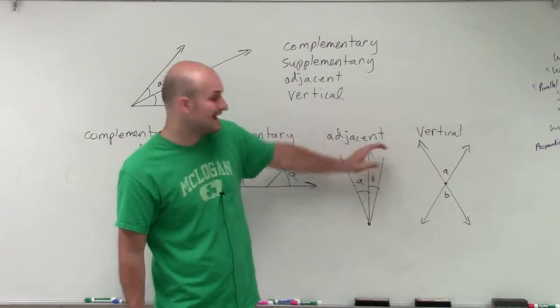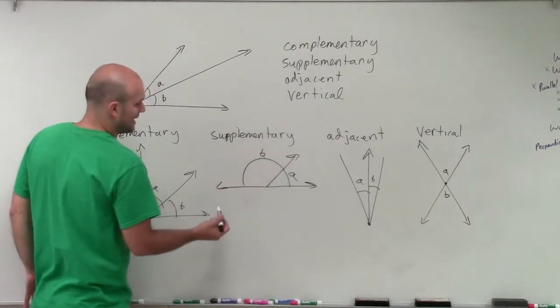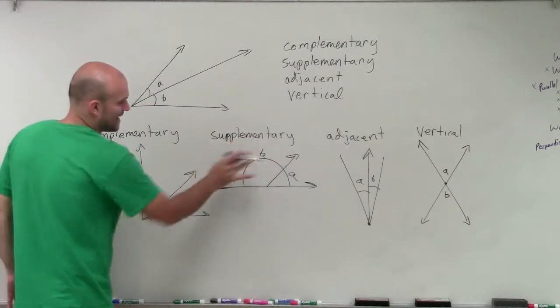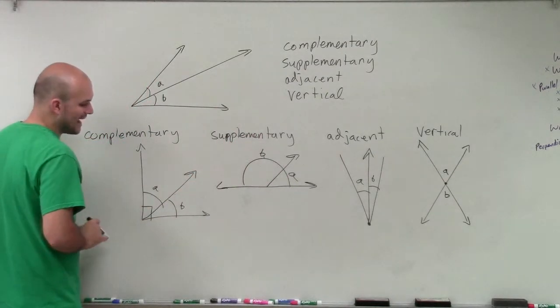Adjacent just share a side and a vertex, complementary add up to 180, sorry, supplementary add up to 180, complementary add up to 90.